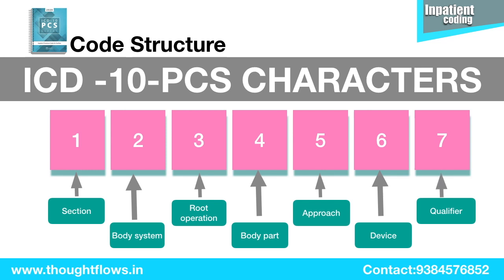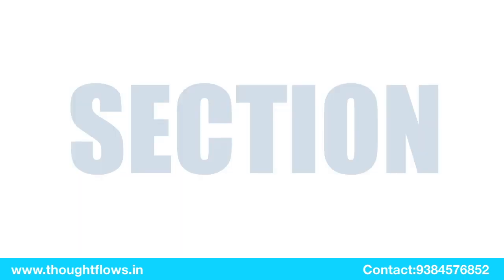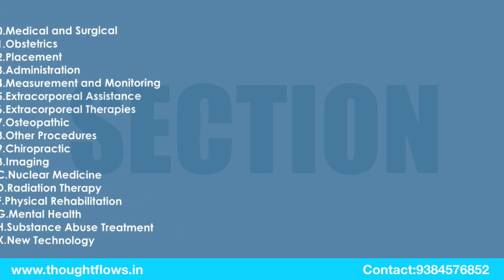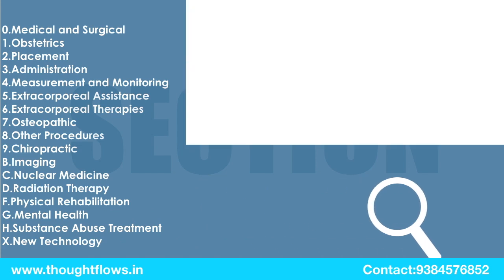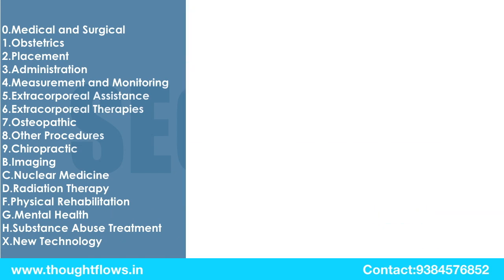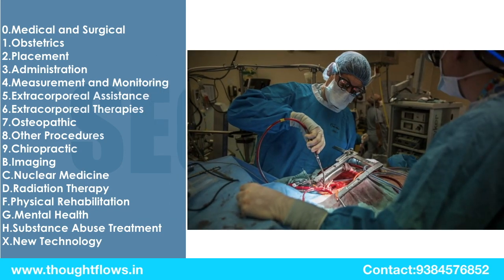Now we will see each of these characters one by one. The first character is Section, which defines the general type of procedure, and it has 17 different types. It will have 0 to 9 numerals and also alphabetics. For example, if the patient had any surgery, all that will be in the Medical and Surgical section, which starts with 0.